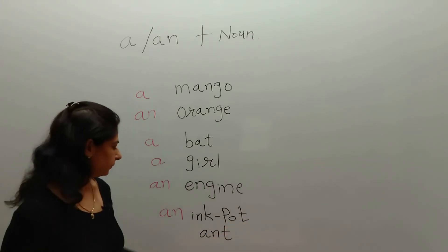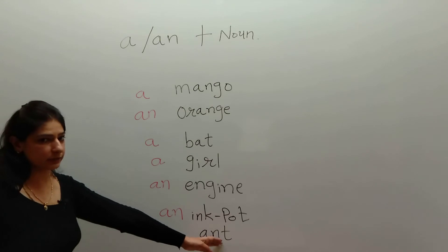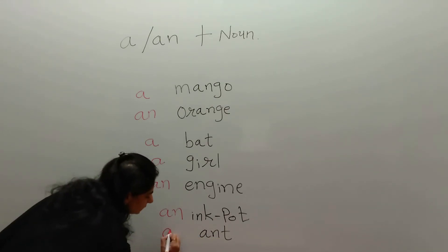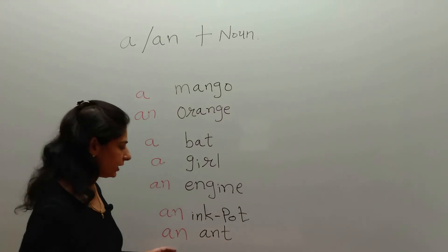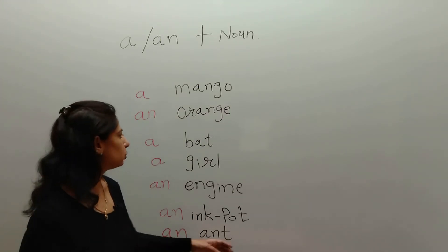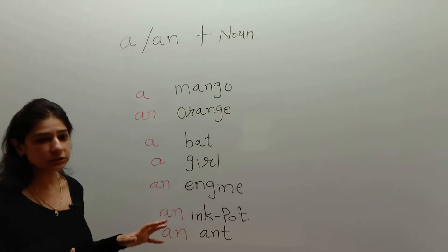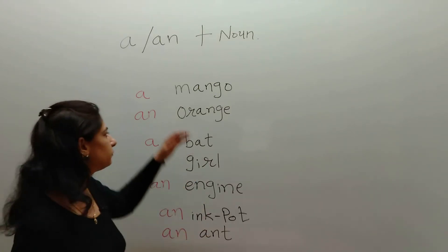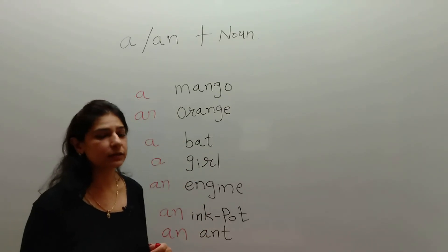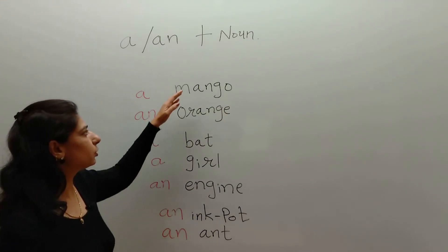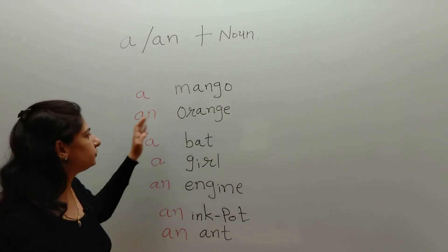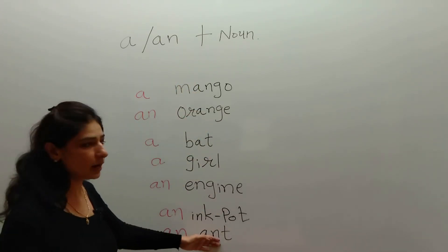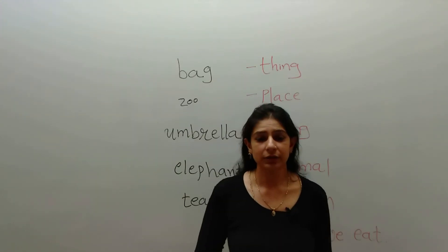So when a word sounds like a consonant we put 'a' in front, and when it sounds like a vowel we put 'an' in front. 'A' and 'an' are called articles, and the words that follow them are nouns — a person, place, thing, or animal.